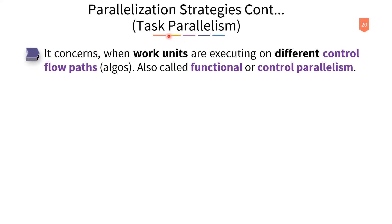Secondly, task parallelism concerns work units that execute on different control flow paths. A program may have different control flow paths — such as different functions, libraries, or main function branches. Task parallelism is also called functional parallelism or control parallelism.